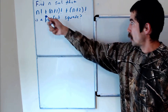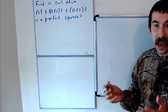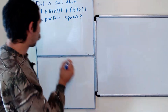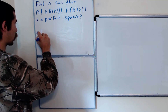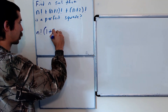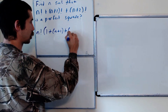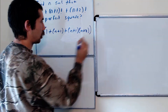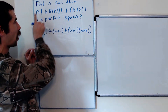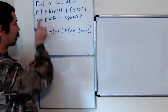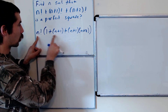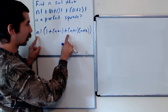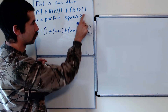Let's start by factoring out an n factorial from each of these terms. So really what we want to find is when n factorial times 1 plus n+1 plus n+1 times n+2 is a perfect square. Factoring out n factorial gives us n factorial, and n factorial times n+1 is n+1 factorial, and n factorial times n+1 times n+2 is the last term.